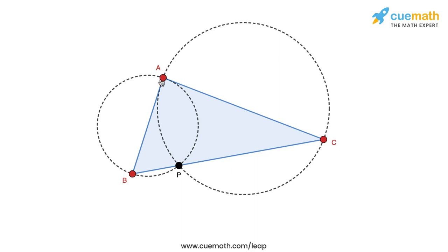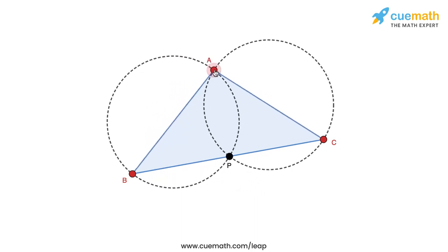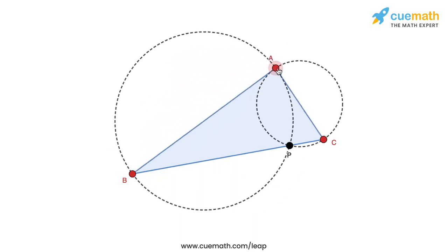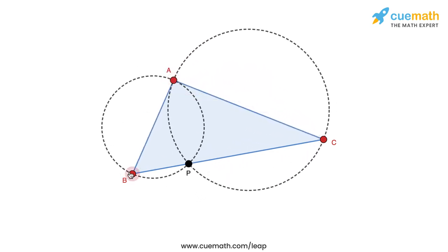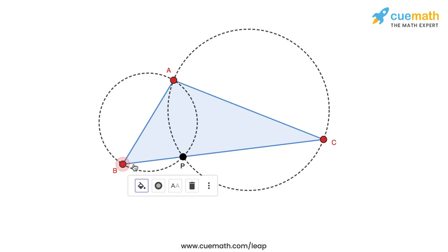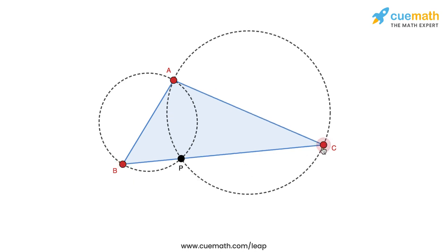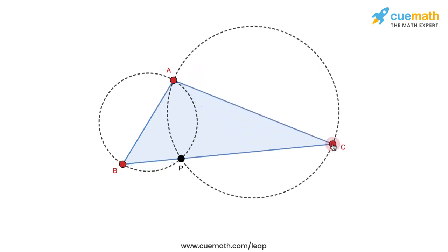This is true even if I vary the triangle. No matter how I vary the triangle, you can see that the point of intersection of the two circles always lies on the third side BC. This is basically what we have to prove — that the point of intersection of the circles will lie on the third side.